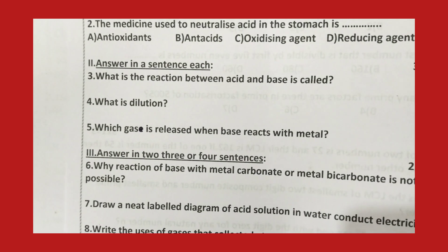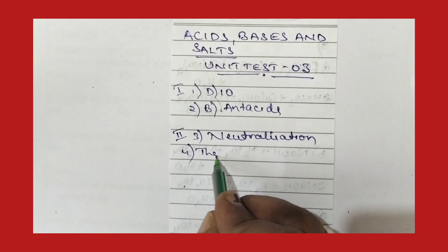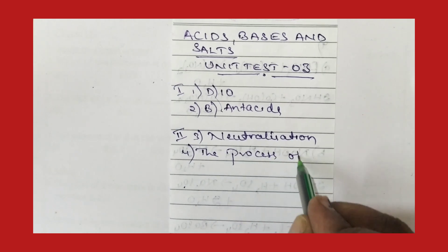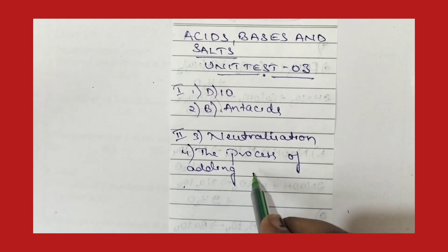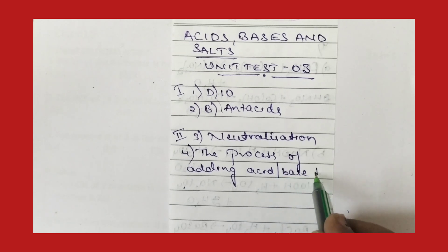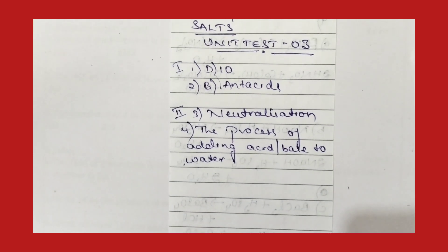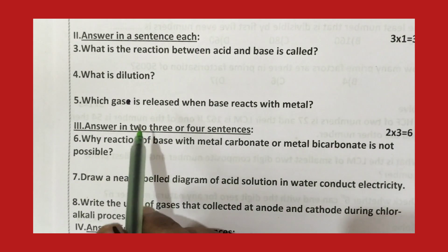The fourth question: what is dilution? Dilution is the process of adding either acid or base to water. That process is called dilution.